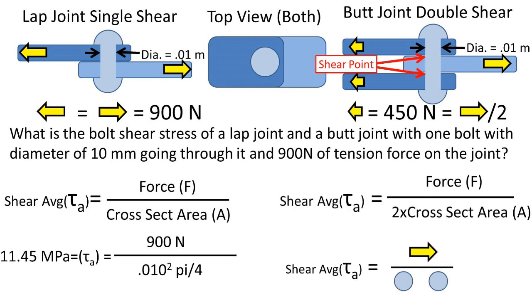Let's move on to the shear stress of the bolt in the butt joint example. We can use the formula tension force over 2 times the cross-sectional area equals the bolt shear stress. We divide the force by 2 times the cross-sectional area because there are 2 shear points sharing the shear load.